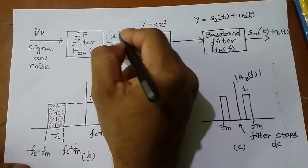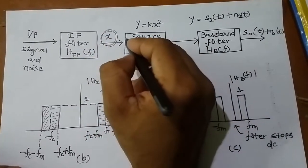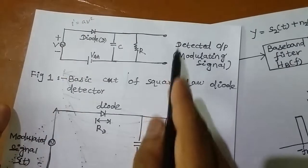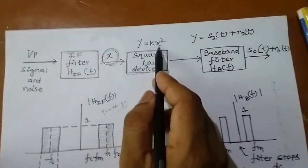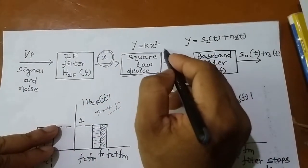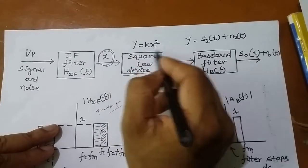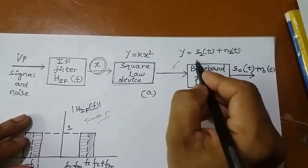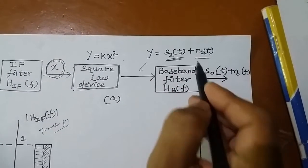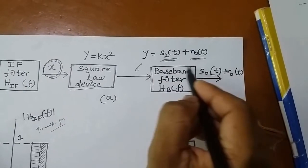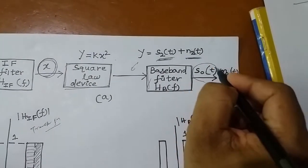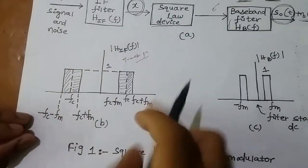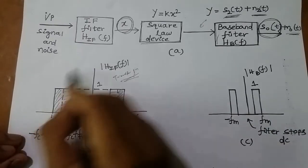The output of the IF filter is x. It then passes through a square law device whose output is y = k·x². You get both the signal component and the noise signal. Then you pass through a baseband low pass filter that filters out the modulating signal plus some noise. This is the transfer function of the IF filter.